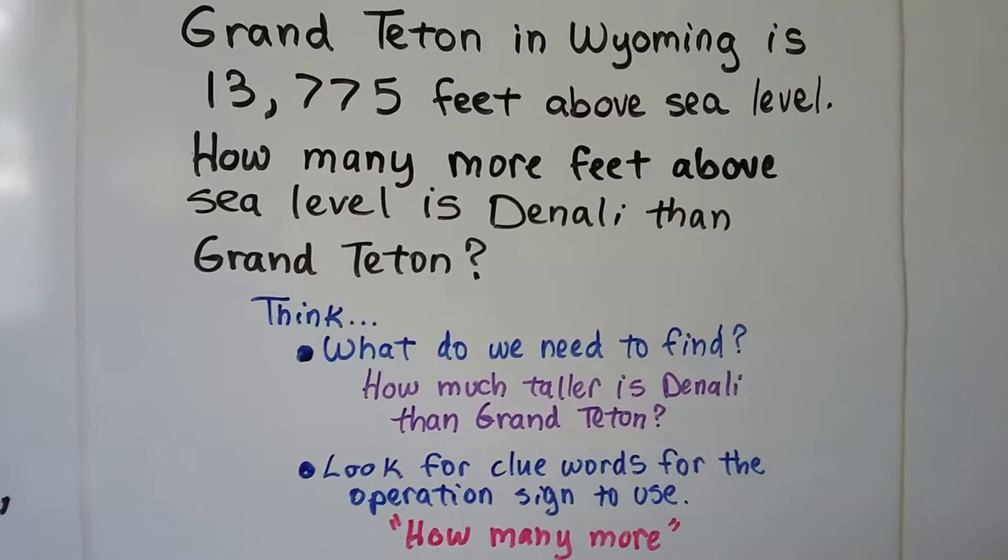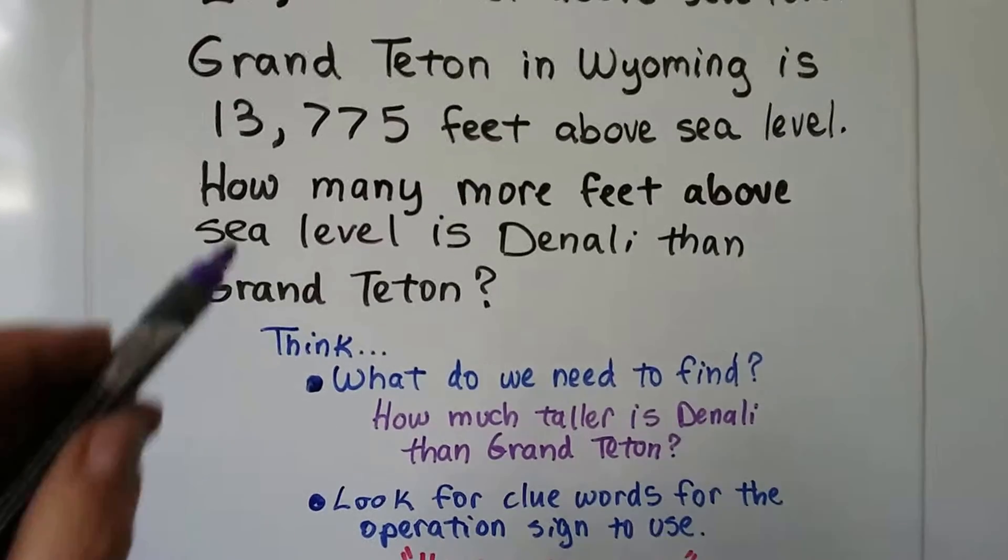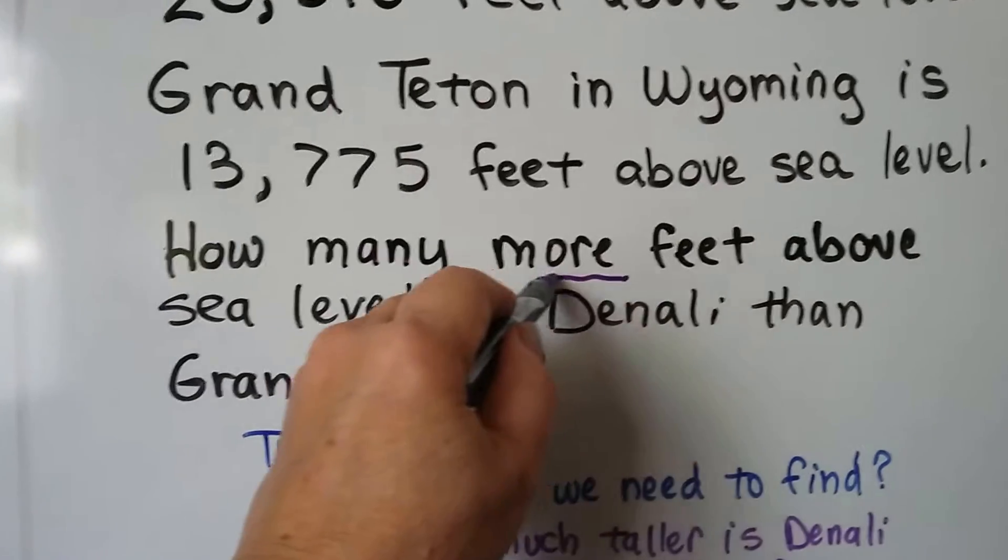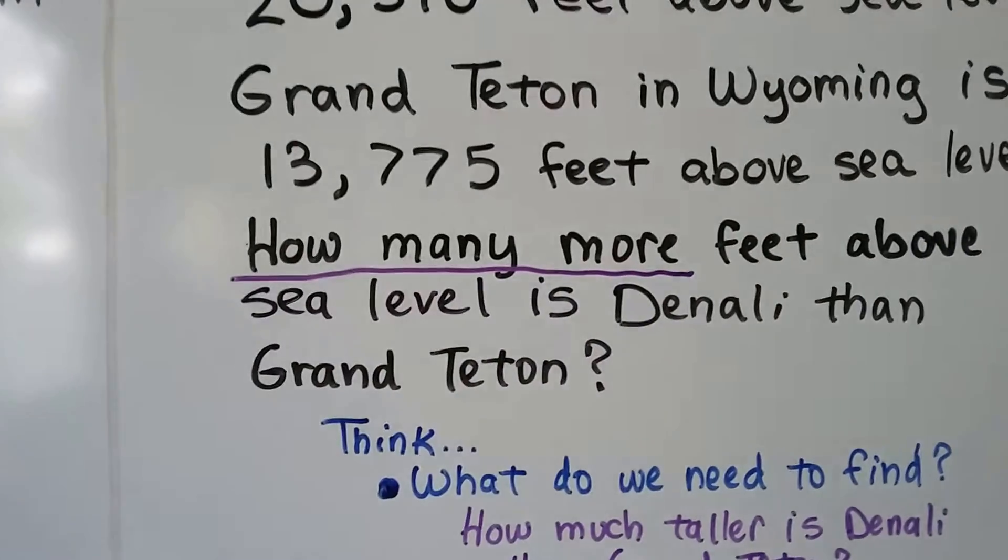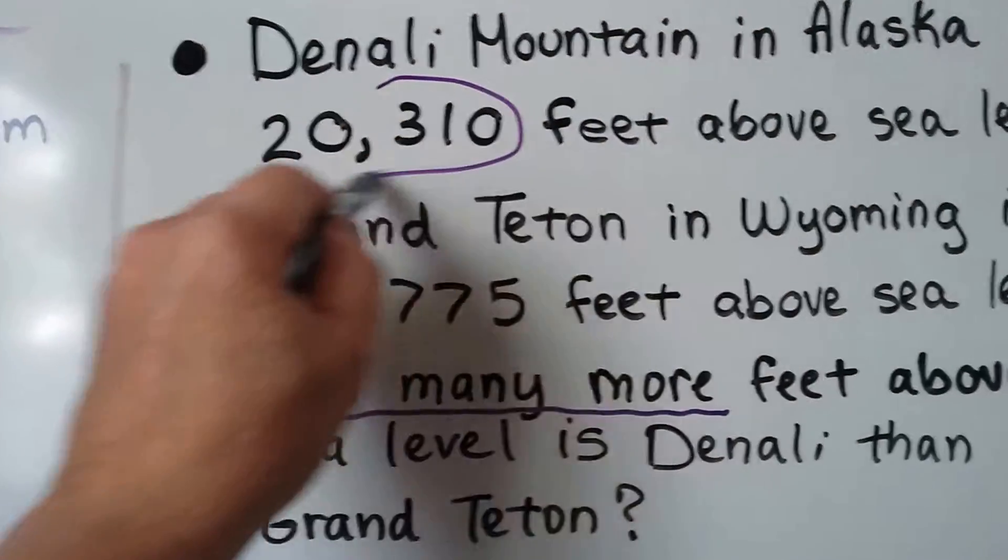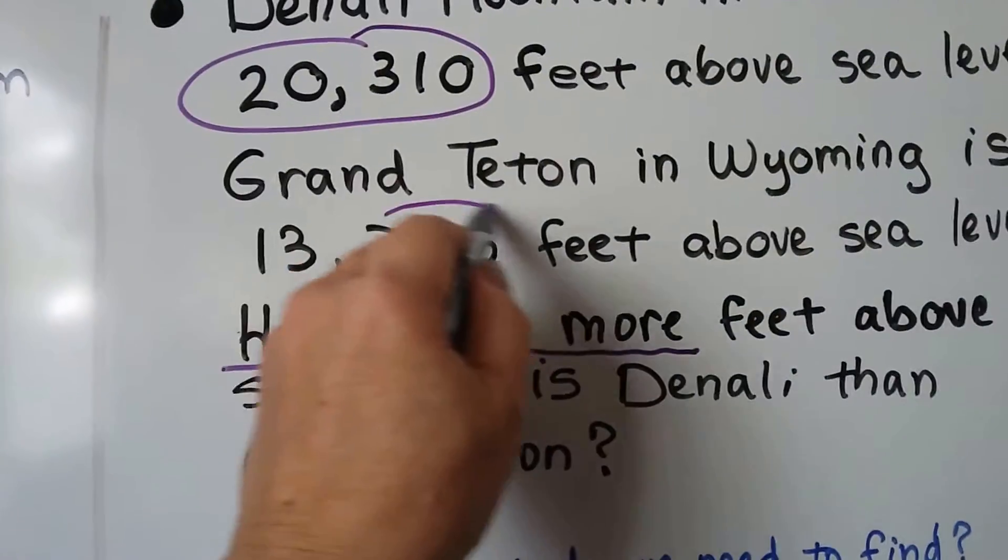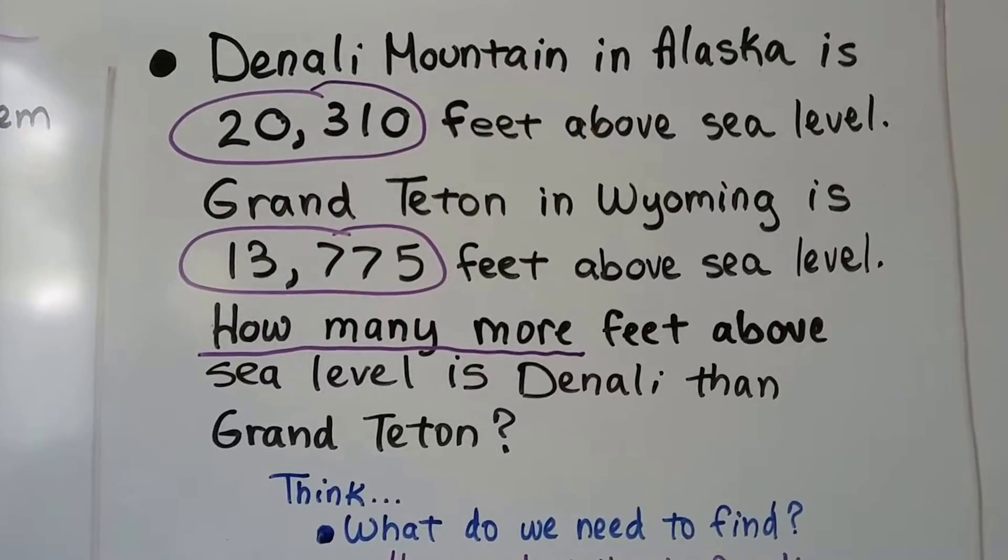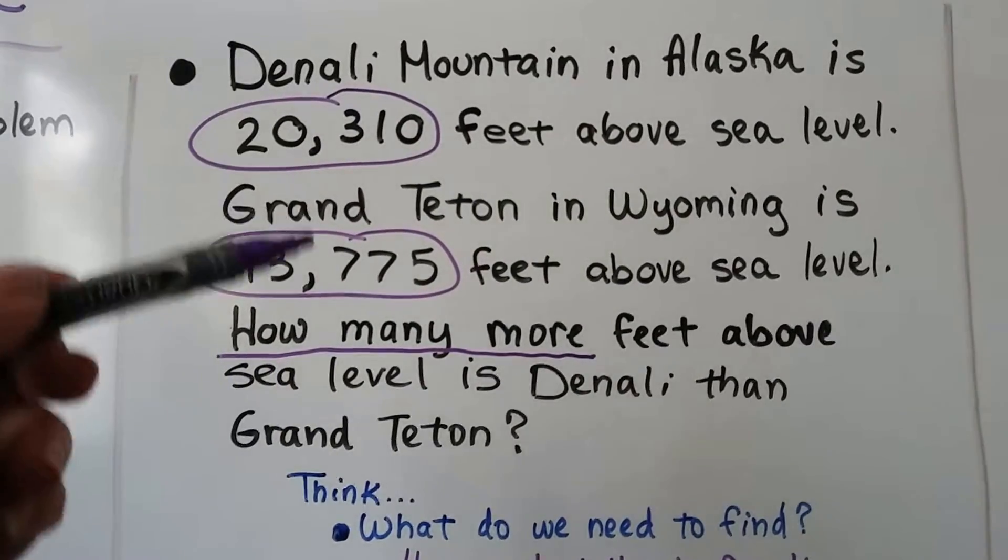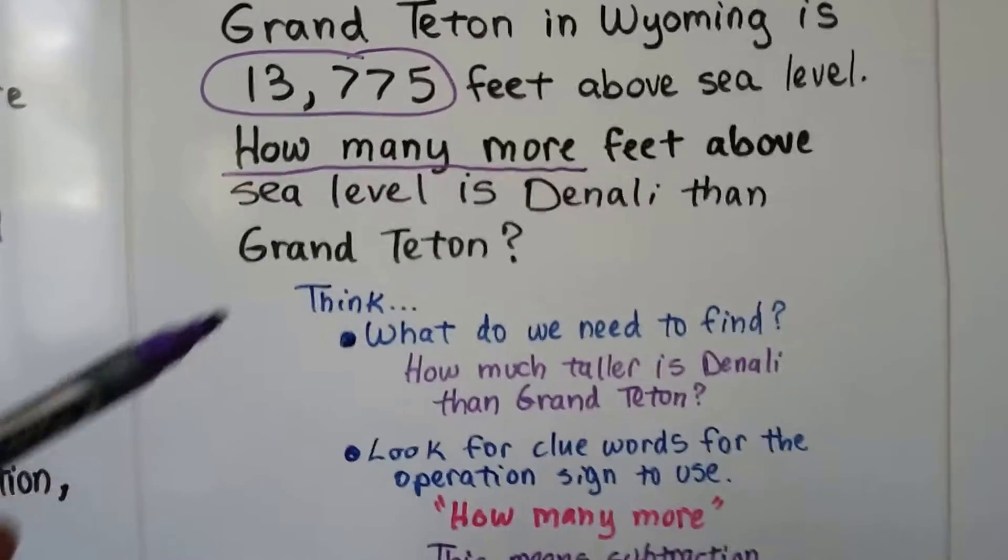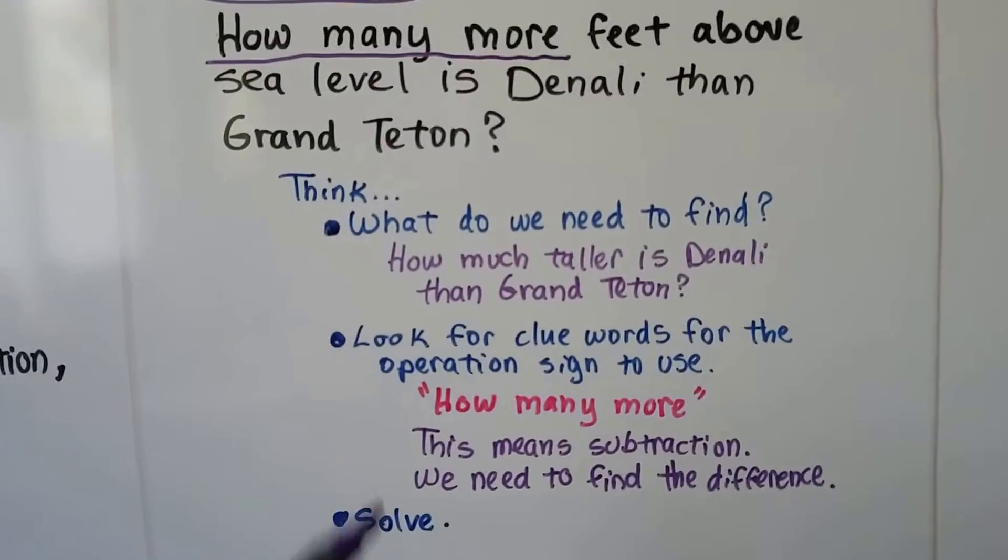We look for clue words for the operation sign to use. We see 'how many more.' So this 'how many more' is telling us that we're comparing them and we need to find a difference. We've got this number, and circling your numbers can help you, but they may not let you write on the test. So pay attention to the numbers. We know we need to find a difference because it says 'how many more.' That means subtraction.